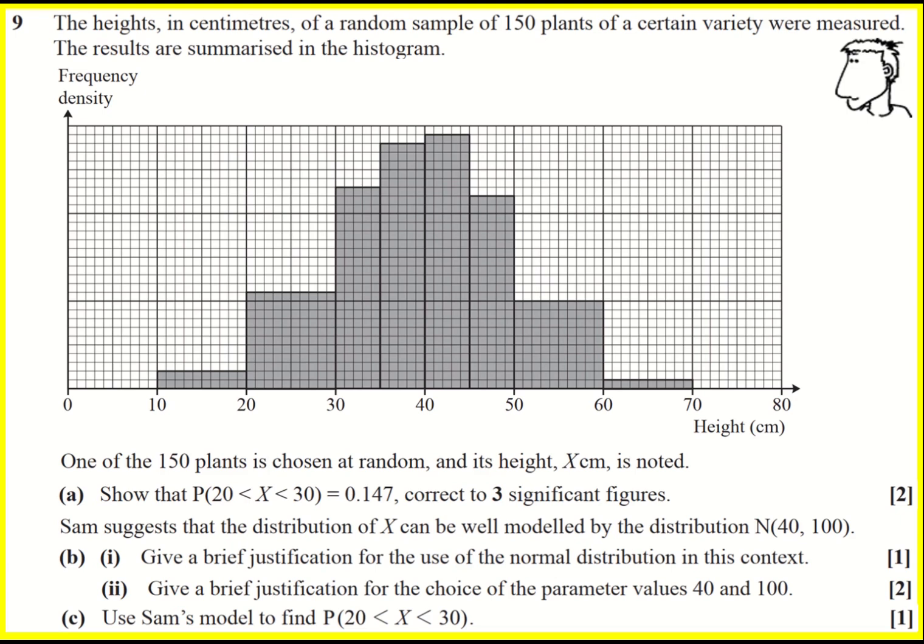We're given a histogram of the heights of 150 plants. Frequency density on the left, on the y-axis, and height on the x-axis. Remember frequency density is the frequency divided by the class width. If we want to get back to the frequency then we find the area underneath the bars. So we know the total area is essentially going to be 150.